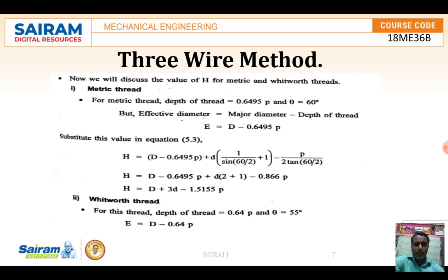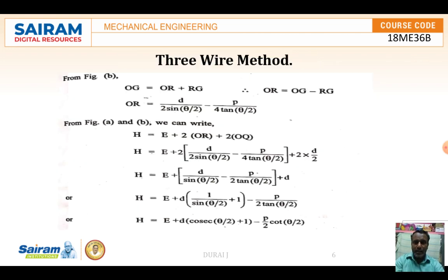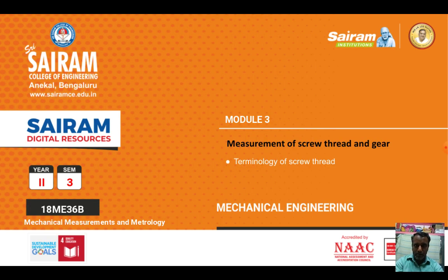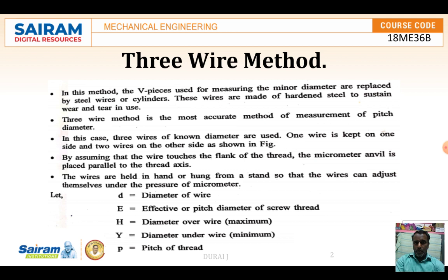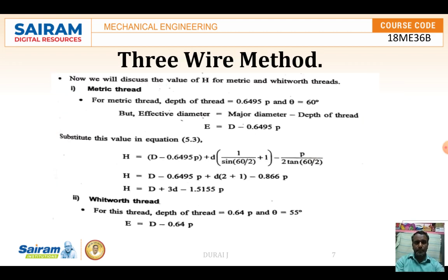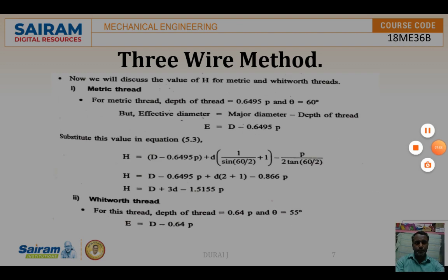With the help of this 3-wire method we are going to measure the effective diameter. This is an important and effective method used to measure the effective diameter — that is the 3-wire method. We have already discussed the 2-wire method; this is the 3-wire method. Next we are going to discuss some of the gear measurements.